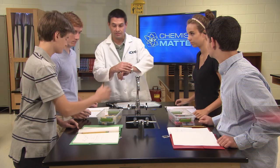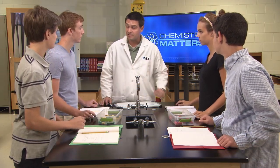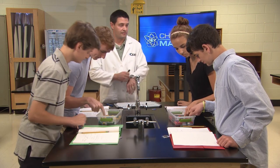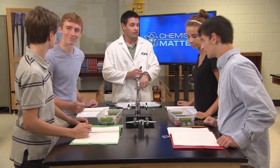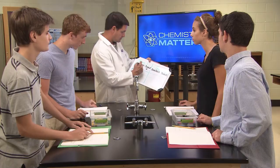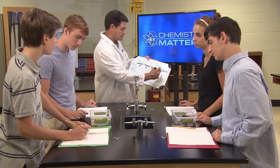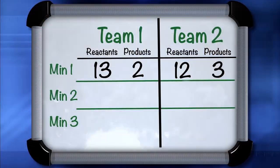Stop. Count how many reactants and how many products you have, and I'll record the results to keep track of the changes over time. Looks like we've got two products and 13 of each of the reactants. Looks like we got three products and 12 of each reactant. Looks like we're faster than the other group. That's just because our reverse reaction was faster than yours. Interesting results.